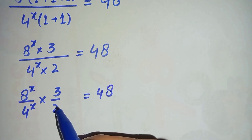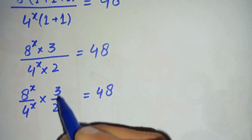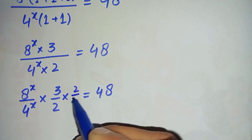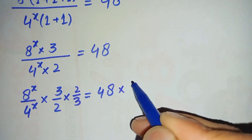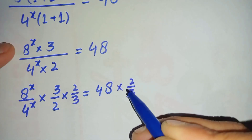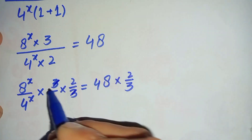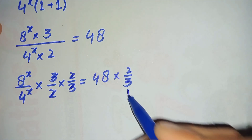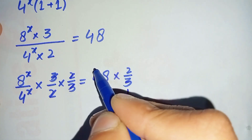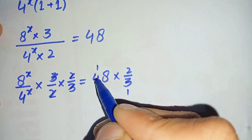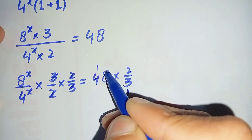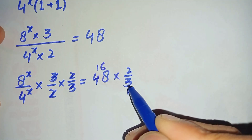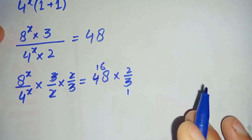To eliminate 3/2 from the left hand side, we will multiply both sides of the equation by 2/3. So the 3 and the 3 cancel, and the 2 and the 2 cancel. On the right hand side, 48 times 2/3 gives us 32, since 3 times 16 is 48.